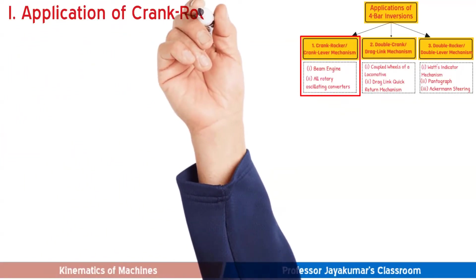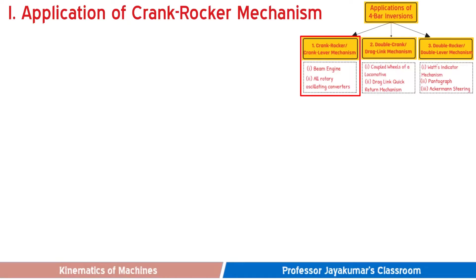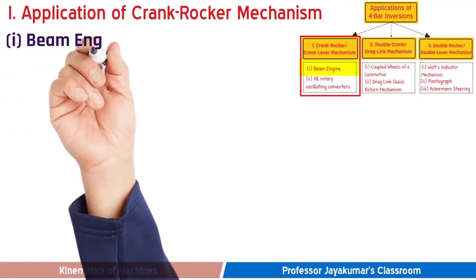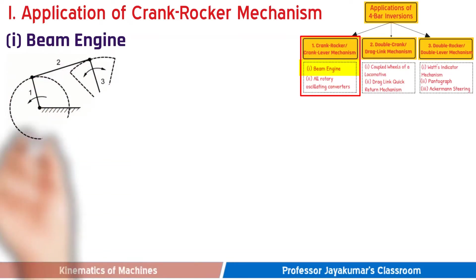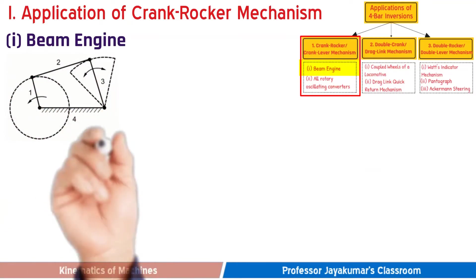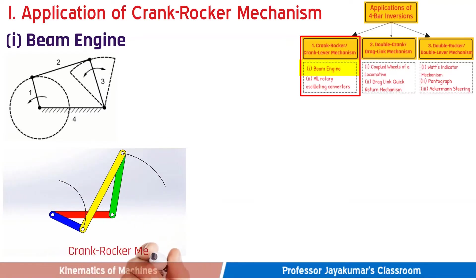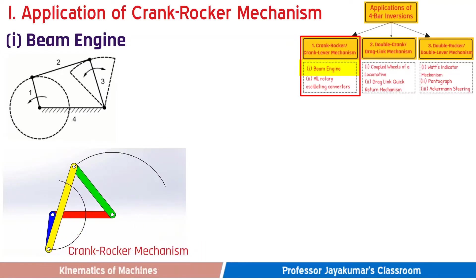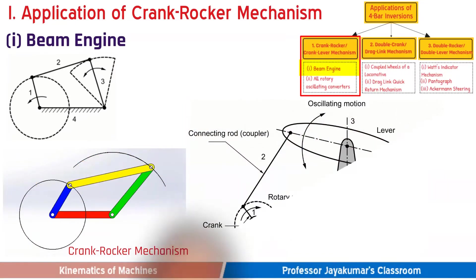First, let us present the application of crank rocker mechanism. The most popular application is a beam engine. In this 4-bar mechanism, the blue coloured link is the crank and the green coloured one is the rocker. That is the basis for the formation of the beam engine.